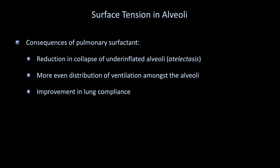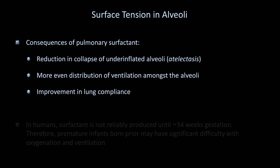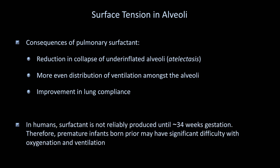The last major clinically relevant aspect of surfactant has to do with preterm births. In humans, surfactant is not reliably produced until about 34 weeks gestation. Therefore, premature infants born prior to this may have significant difficulty with oxygenation and ventilation, a condition called infant respiratory distress syndrome — not to be confused with adult respiratory distress syndrome, which is quite different. Treatment consists of a combination of positive pressure ventilation and exogenous surfactant delivered to the alveoli via instillation into the airways while intubated. If a mother is suspected to be at high risk of preterm delivery, she can be given antenatal corticosteroids, which speeds up the infant's synthesis and release of surfactant.